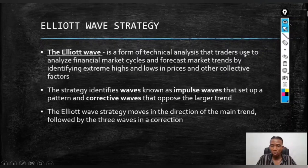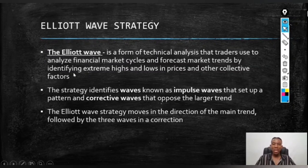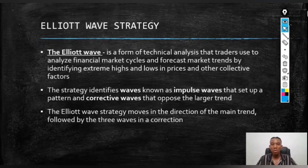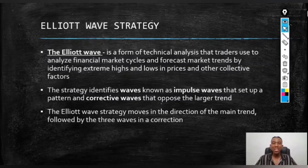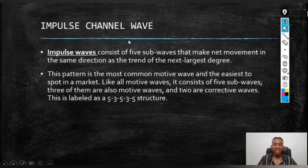An Elliott Wave is a form of technical analysis that traders use to analyze financial market cycles and forecast market trends by identifying extreme highs and lows in prices and other collective factors. This strategy goes hand in hand with technical analysis — you need to identify highs and lows and other factors that affect those moves. It identifies impulse waves that set up a pattern and corrective waves that oppose the larger trend. The Elliott Wave moves in the direction of the main trend, and the main trend is bullish — meaning an uptrend.